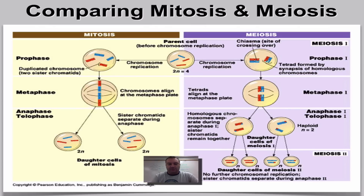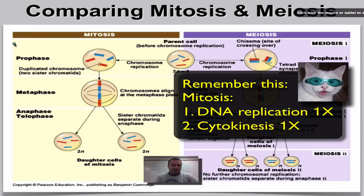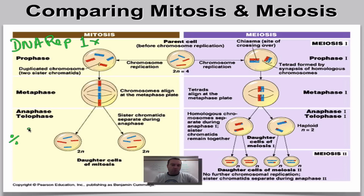First, look over here on the left side of your screen at mitosis. You'll notice that mitosis has just one replication and one cell division. In mitosis, you do DNA replication one time and then cell division one time also. What happens is you're going to go from a 2N mother cell — you have two of every chromosome — and then your daughter cells are also going to be 2N.